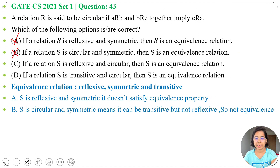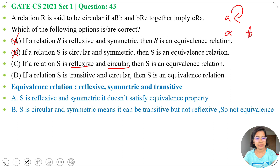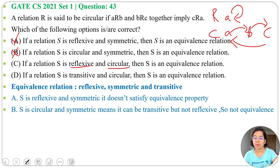Option C: If a relation S is reflexive and circular, then S is an equivalence relation. Reflexive means A is related to A. Circular means A is related to B and B is related to C implies C is related to A. For equivalence it should also be symmetric and transitive, so let's try to derive those.